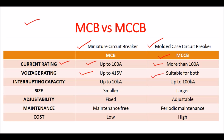Interrupting capacity: MCB has a lower interrupting capacity, generally up to 10 kilo amps. Whereas MCCB has a higher interrupting capacity, typically up to 100 kilo amps.